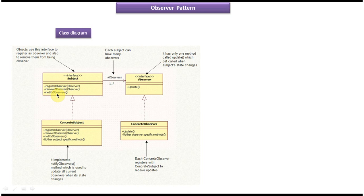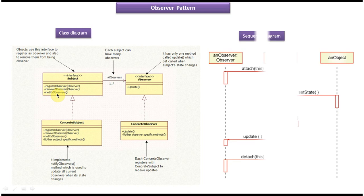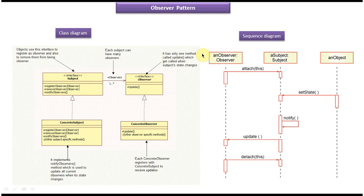So this is the class diagram of the observer design pattern. Next we will see the sequence diagram of the observer design pattern. There are two components — one is observer and another one is subject. The observer wants to get notifications, so it attaches to the subject, meaning it is registered to the subject. The subject will send notifications to all registered observers whenever there is some state change. You can see this object changes some status in the subject, and when the state changes, the subject sends a notification to the registered observer by calling the update method.